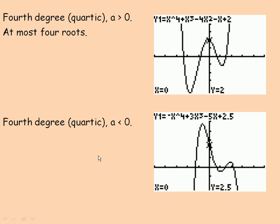The example on the bottom of the page is a fourth degree or quartic with a negative leading coefficient — a is less than zero. So we can call this a negative quartic. It has the shape of an M and it can cross at most four places. It could cross in less than that as well, or none, similar to the example I drew above. So it has at most four roots.